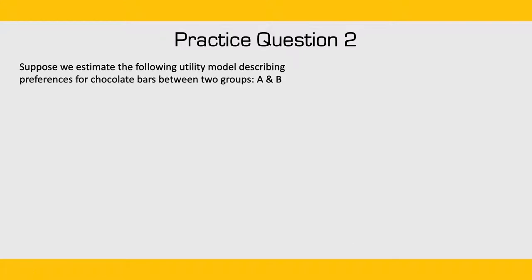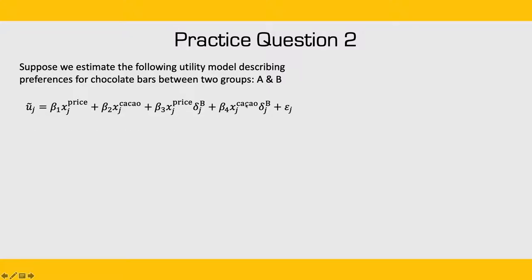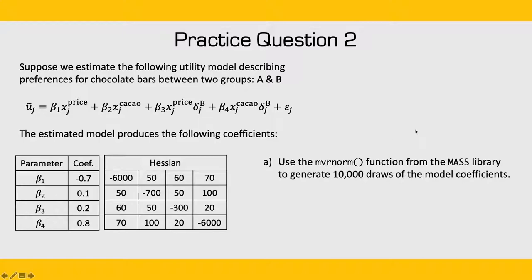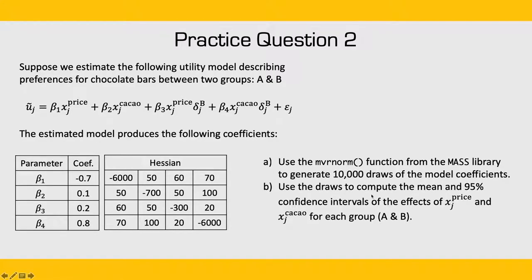For practice question 2, suppose we estimate a utility model describing preferences for chocolate bars between two groups A and B, with attributes price and percentage cacao, and a dummy coefficient taking 1 if the respondent is from group B, interacting with price and cacao. After estimation, we have four parameter coefficients and a Hessian from the estimation procedure. For part A, use the mvrnorm function from the MASS library to generate 10,000 draws. For part B, use the draws to compute the mean and 95% confidence interval of the effects of price and percentage cacao for each group.